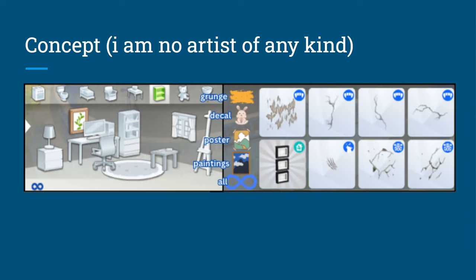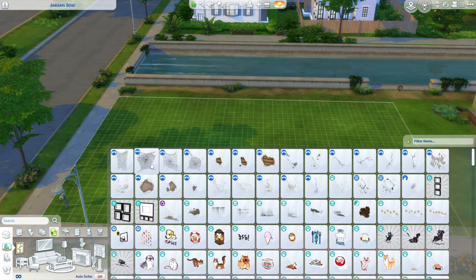What I mean is basically subcategories. Obviously I'm no concept artist, I can't do that, so I just put stickers on what I mean. I think it would be good to have a category for grunge, decals, posters, and paintings, because the painting category is just filled up — there's a lot of decals, a lot of grunge, a lot of things you have to scroll through.